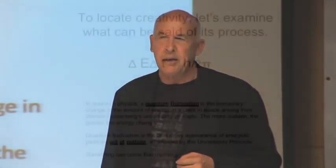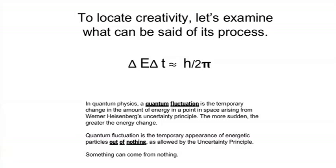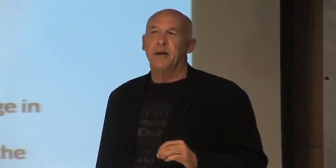Where does creativity come from? Where is invention from? This is Werner Heisenberg's quantum fluctuation formula. It describes the relation between a change in time and a change in energy, and it provides that because of that interrelation, at one moment something can come out of nothing.